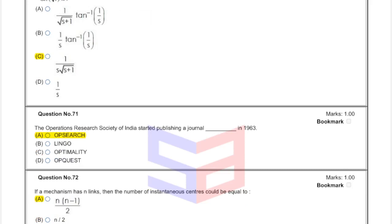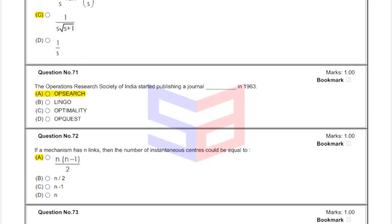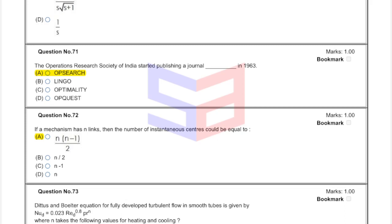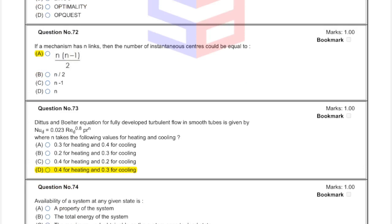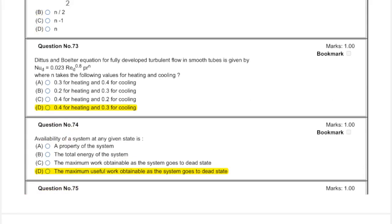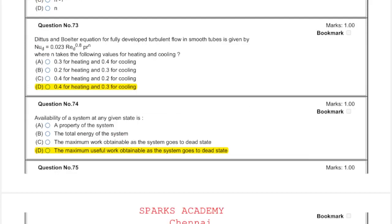Question 72: if a mechanism has n links, then the number of instantaneous centers is equal to n(n−1)/2 — answer option A. Question 73: option D. Question 74: availability of a system — the maximum useful work obtainable as a system goes to a dead state — answer option D.